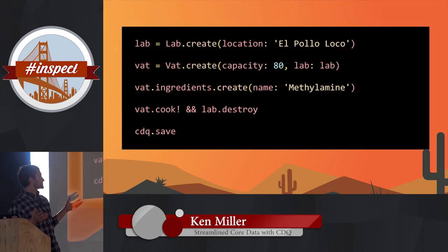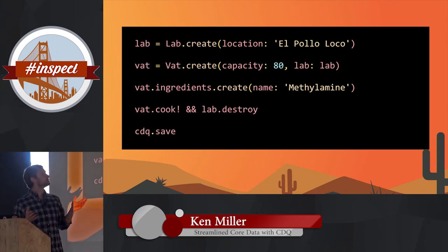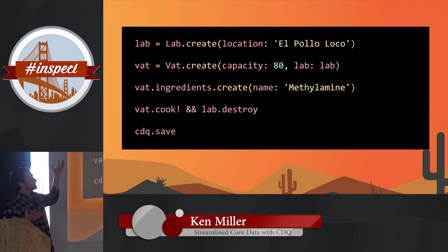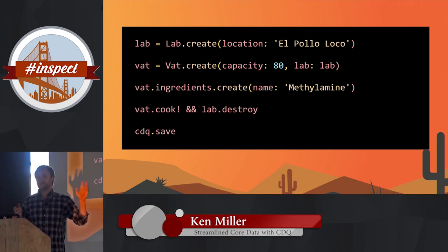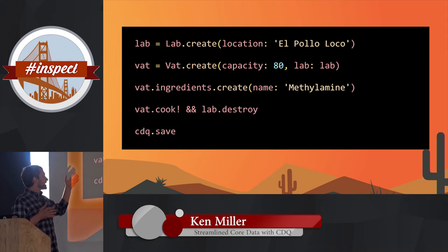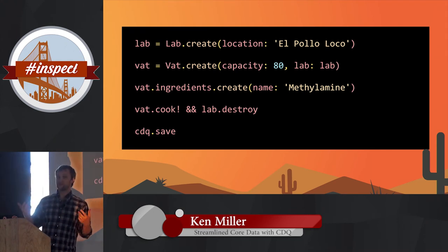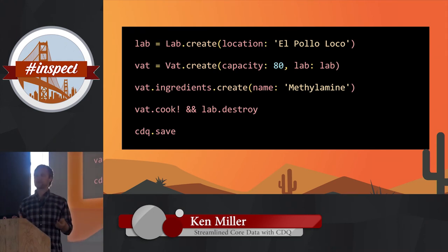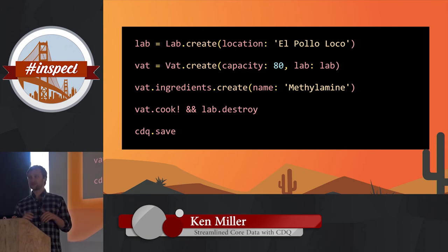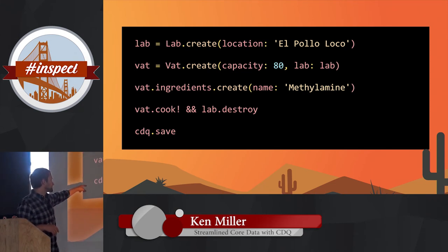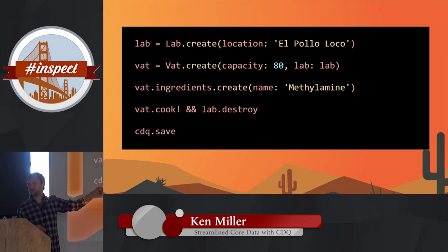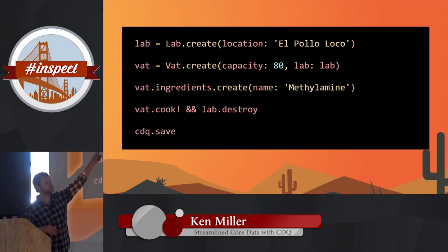This is how you create and destroy objects. It looks just like ActiveRecord pretty much. You're not having to interact with context at this point — you can anytime you want to, but you don't have to. So 90% of the time you can operate blissfully unaware of them. The only thing you do have to know is that you don't save objects. You never save objects. You add the object to the context, which CDQ is doing for you.